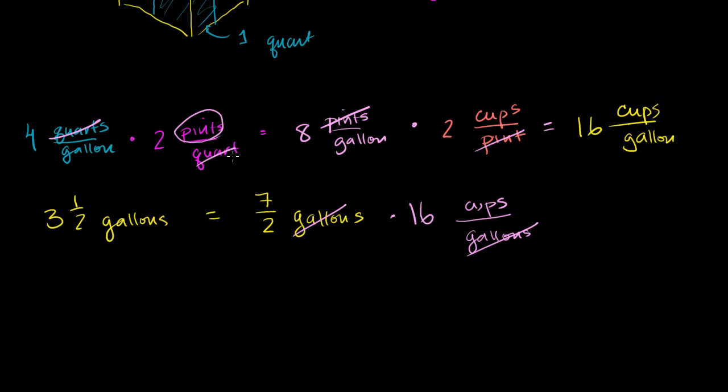It's going to be 7 halves times 16, so this is 7 times 16 over 2 cups. Then 16 divided by 2 is 8, so it becomes 7 times 8, which is 56. This equals 56 cups.